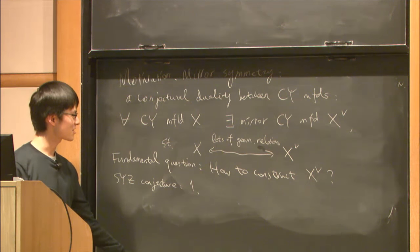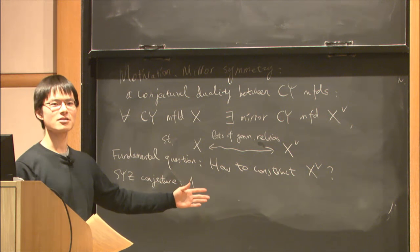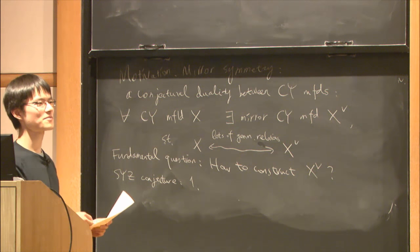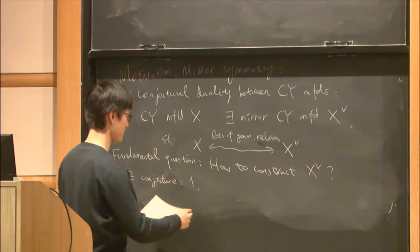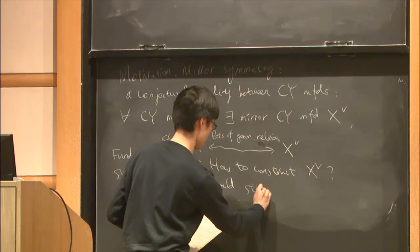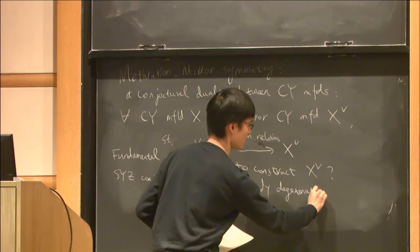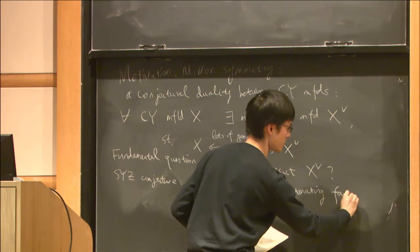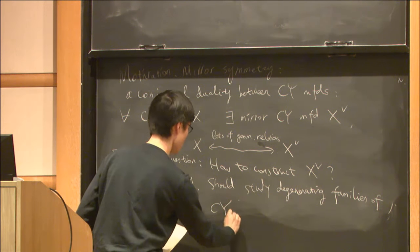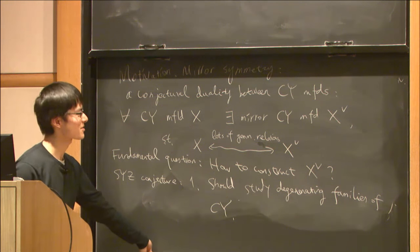First, the conjecture says that for mirror symmetry, one should study degenerating families of Calabi-Yau manifolds instead of individual ones.